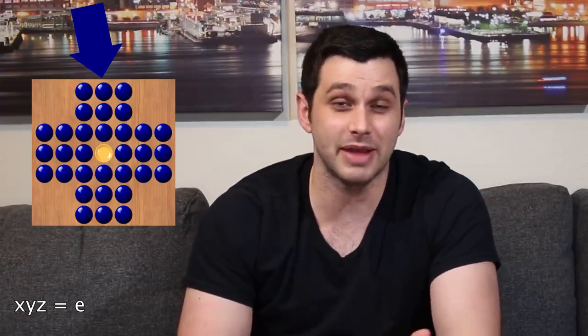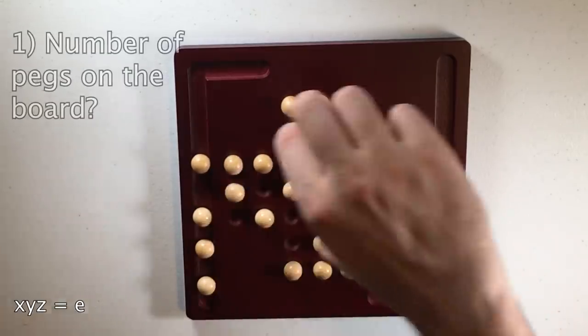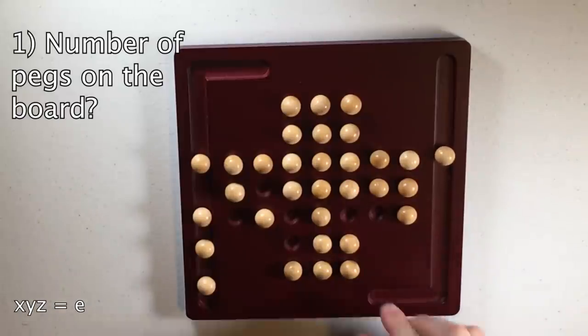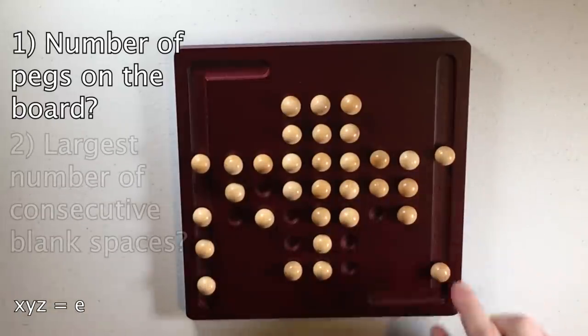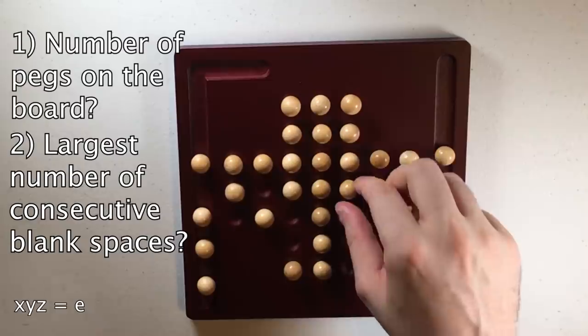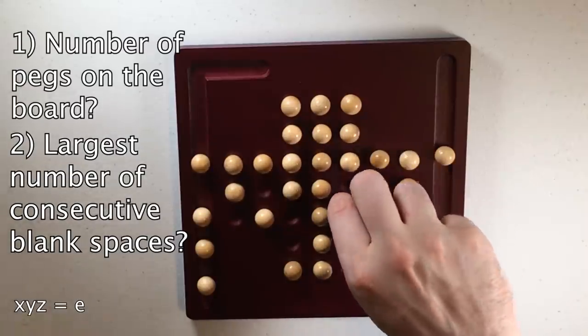Now, the question we'll answer using group theory is, when there's one peg remaining, where can it possibly be? After completing the game you just saw, my last peg was here. But could it have been anywhere else? When doing analysis like this, it's often helpful to figure out what cannot change throughout the game, or what remains constant, although that isn't always easy to find, unfortunately. So for example, is the number of pegs on the board constant as we play? Of course not. What about the largest number of consecutive blank spaces? Well no, that changes too.